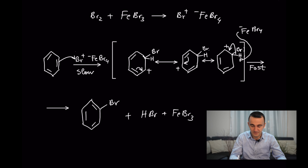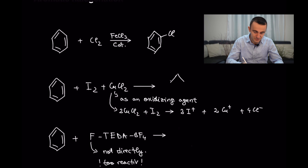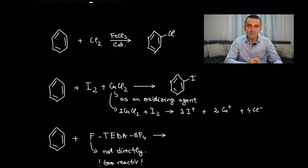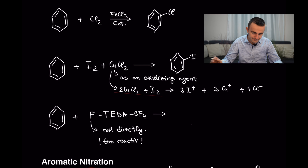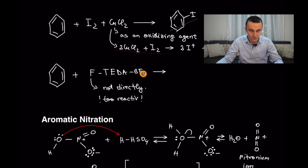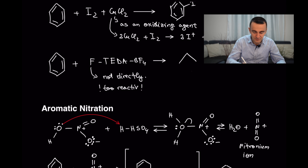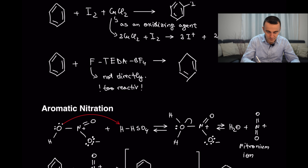The catalyst normally enters and exits the reaction in the same form. For aromatic halogenation: benzene reacting with chlorine uses iron chloride as catalyst to give a chlorinated aromatic compound. If you use iodine, it needs an oxidizing agent such as copper chloride, and you get formation of an aromatic compound containing iodine.